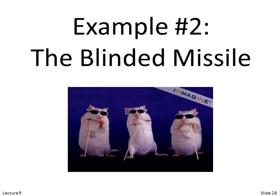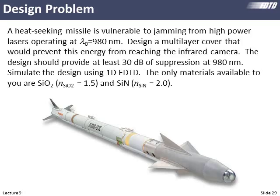Our second example, the blinded missile. So let's say we have a missile and it's being jammed at a wavelength of 980 nanometers. And so that 980 nanometers is a high power beam on the ground that's coming into that missile and it's saturating the sensor here. So it's essentially being blinded. What we'd like to do is design some kind of window that blocks the 980 nanometer light. And we would like at least 30 dB of suppression. That means 99.9% has to be reflected or absorbed. And the only materials we have to do this with is silicon dioxide with a refractive index of 1.5 and silicon nitride with a refractive index of 2.0. So those are our only options for materials. What can we do?